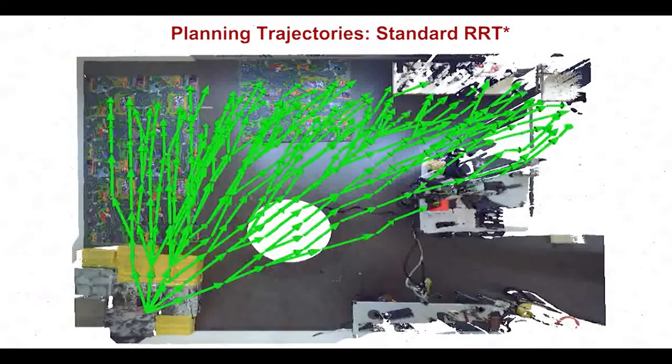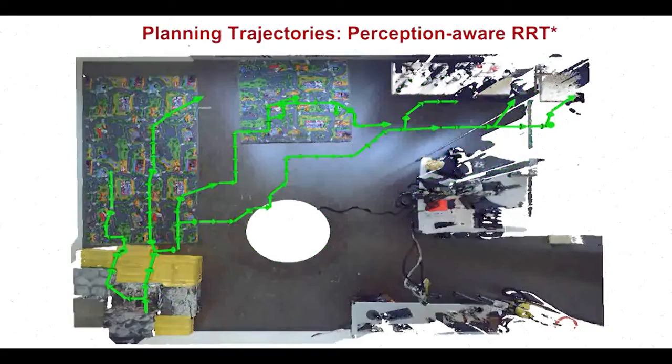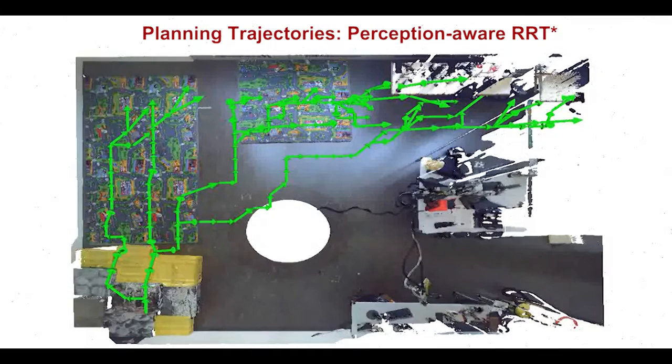The standard planner computes the optimal tree without taking into account the scene appearance. Conversely, our perception-aware RRT star grows the tree by maintaining the trajectories as much as possible over high textured areas.